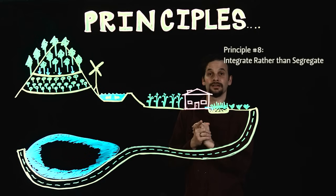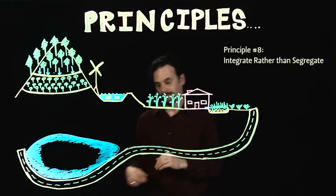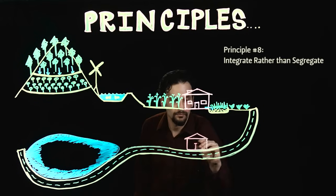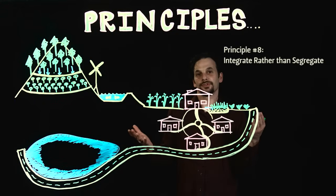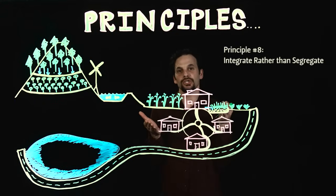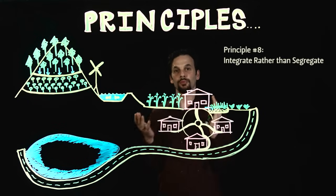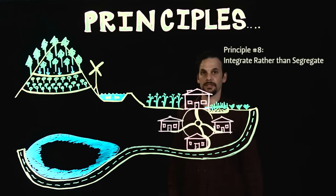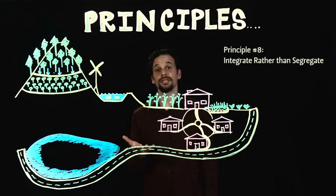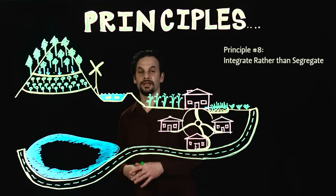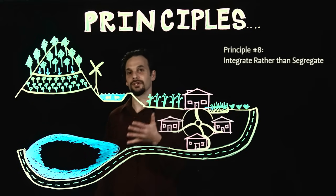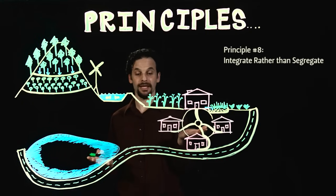Principle 8 is Integrate rather than Segregate. This principle says that the more relationships between parts of your system, the stronger, more productive, and more resilient your system becomes. This has to do with community as well — I drew a cluster of dwellings where a cooperative community can get much more done than an individual. Many hands make light work.